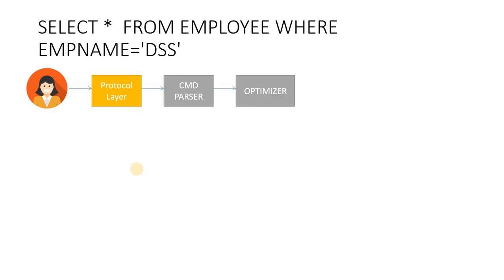Once the SQL is validated by the Command Parser, we go straight to the Optimizer Engine. In the Optimizer Engine, we start to see index tuning, fragmentations, indexes, and index fragments. The optimizer works based on SQL statistics — including table statistics, index statistics, data row counts — and uses multiple algorithms and multiple plans to evaluate and create the best execution path.